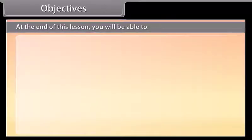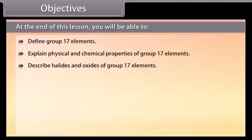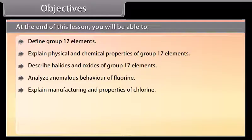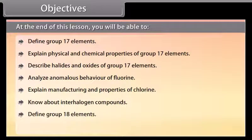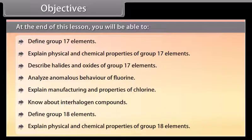Objectives: At the end of this lesson, you will be able to define Group 17 elements, explain physical and chemical properties of Group 17 elements, describe halides and oxides of Group 17 elements, analyze anomalous behavior of fluorine, explain manufacturing and properties of chlorine, know about interhalogen compounds, define Group 18 elements, and explain physical and chemical properties of Group 18 elements.